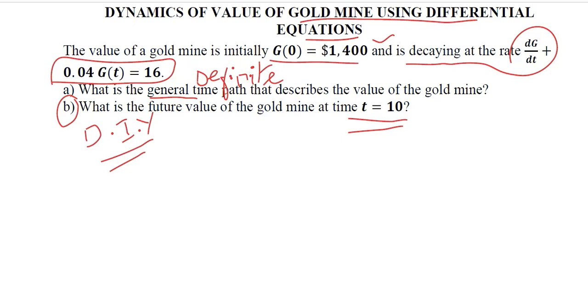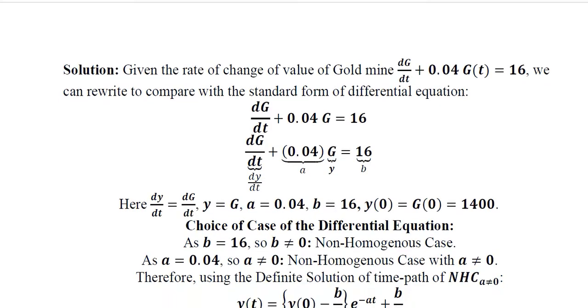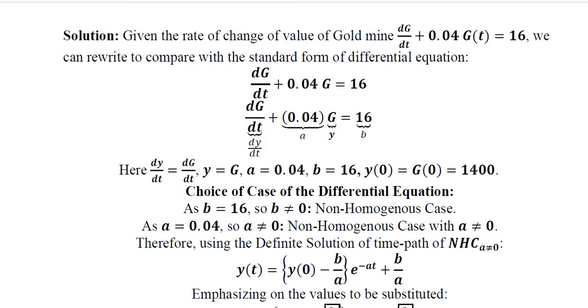Let's start with the first part in which this first order differential equation is given and the initial condition is also given. We note the given differential equation and compare it with the standard form which will allow us to have the value of a and b. Instead of G we have y and instead of this derivative we have this value.